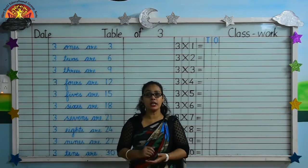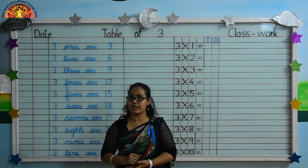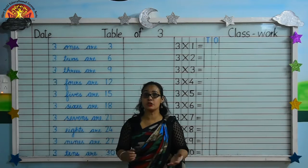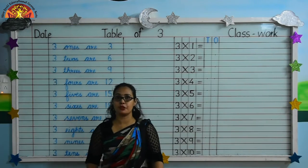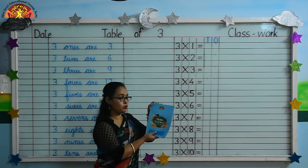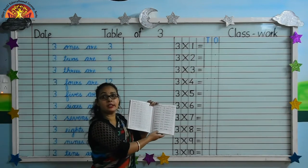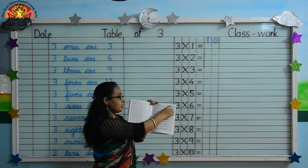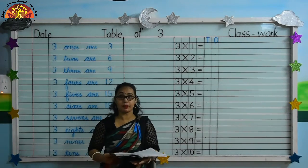Kids, in earlier class, we have already learned to recite the table of three. Today we will write the table of three in our maths workbook. So take out your maths workbook. Open page number 79. Kids, don't forget to mention the date and classwork. Let's write with me. Take out your pencil.